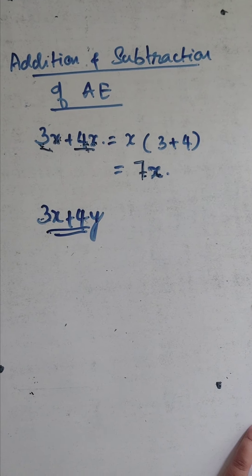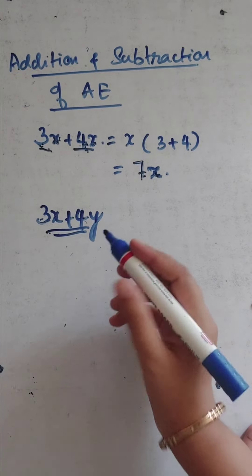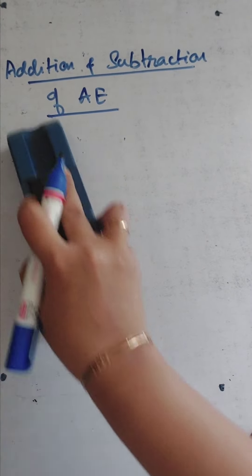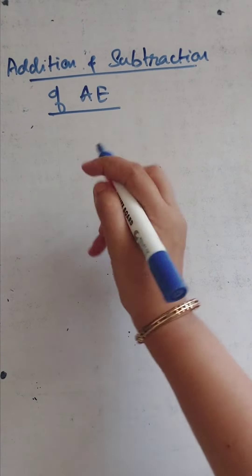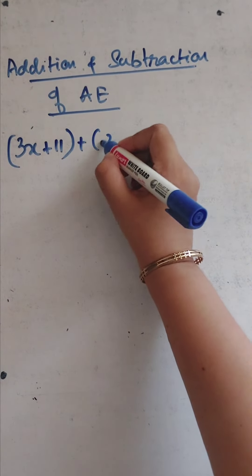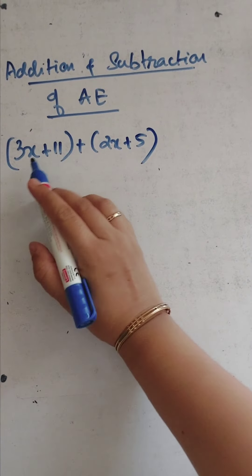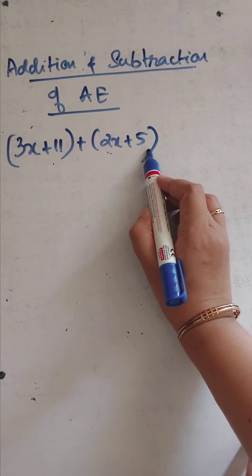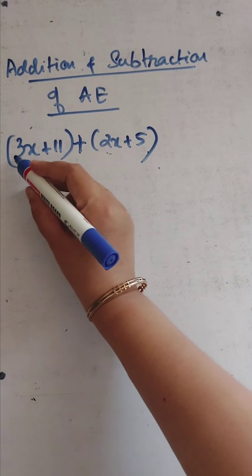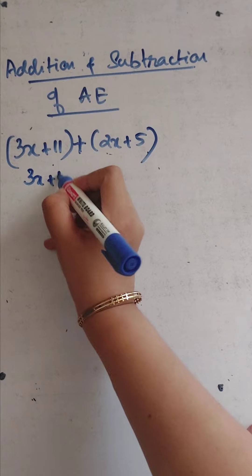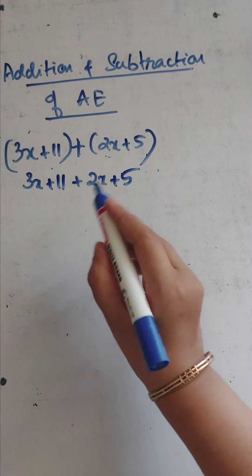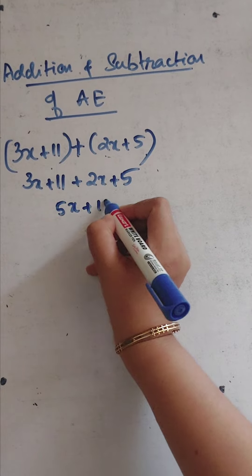Now we will take another example: (3x plus 11) plus (2x plus 5). This is one expression and this is another. We are supposed to add these two expressions. First we remove the brackets, giving us 3x plus 11 plus 2x plus 5. Then 3x plus 2x is 5x, and 11 plus 5 is 16. So the answer is 5x plus 16.